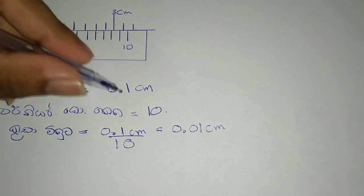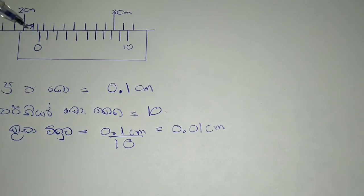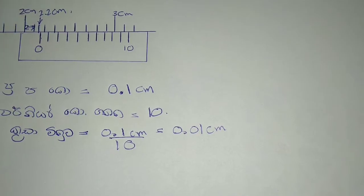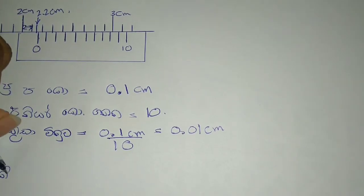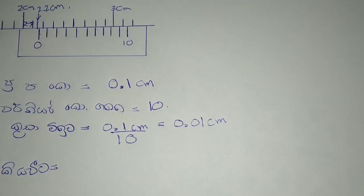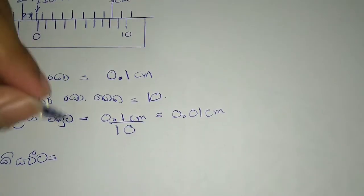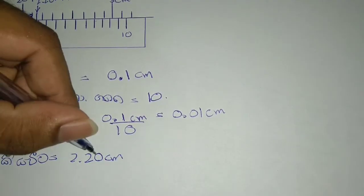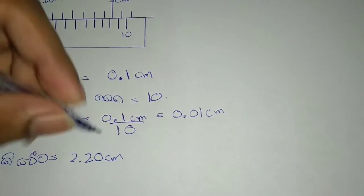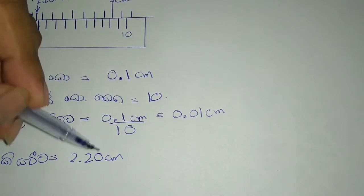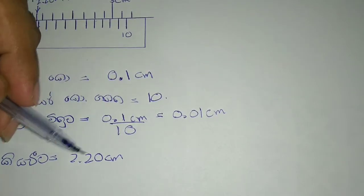So, 1 root of Po 3 is 2.2 cm. So 1 root of Po 2, so 1 root of Po 1 root, called Po 22, is 2.2 cm.